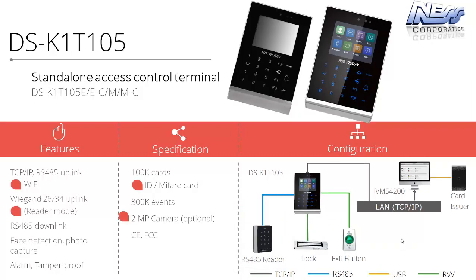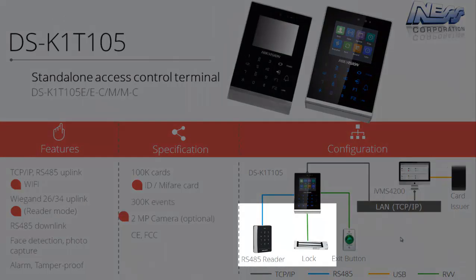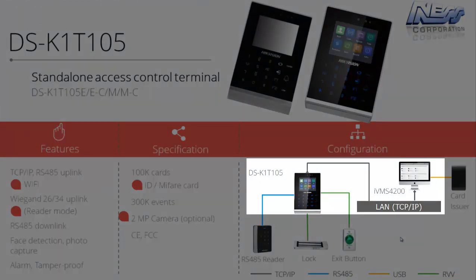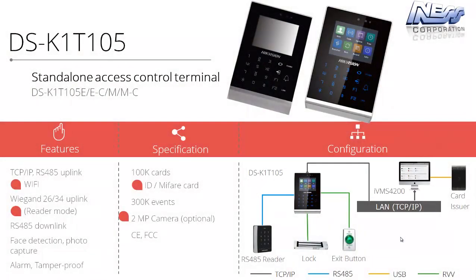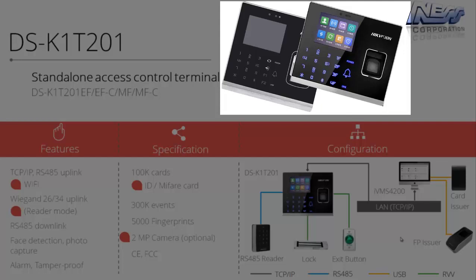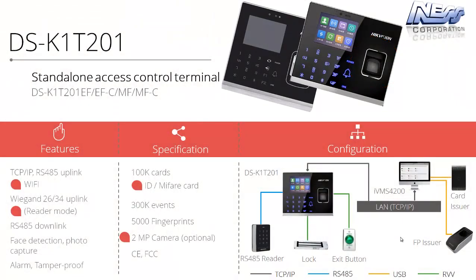Also available in the range are standalone access control terminals. These are one-door standalone systems supporting up to 100,000 cards and 300,000 events. They have RS-485 for connecting an external reader if required, and TCP/IP to connect back to IVMS 4200 for programming. If you can't hardwire a LAN to the terminals, you can connect via the onboard Wi-Fi. They also include an onboard camera — not for recording to an NVR, but for taking a photo every time there is an access attempt. They are available in two models: one without a fingerprint reader, and one with a built-in fingerprint reader, allowing card-only, PIN, fingerprint, or any combination.